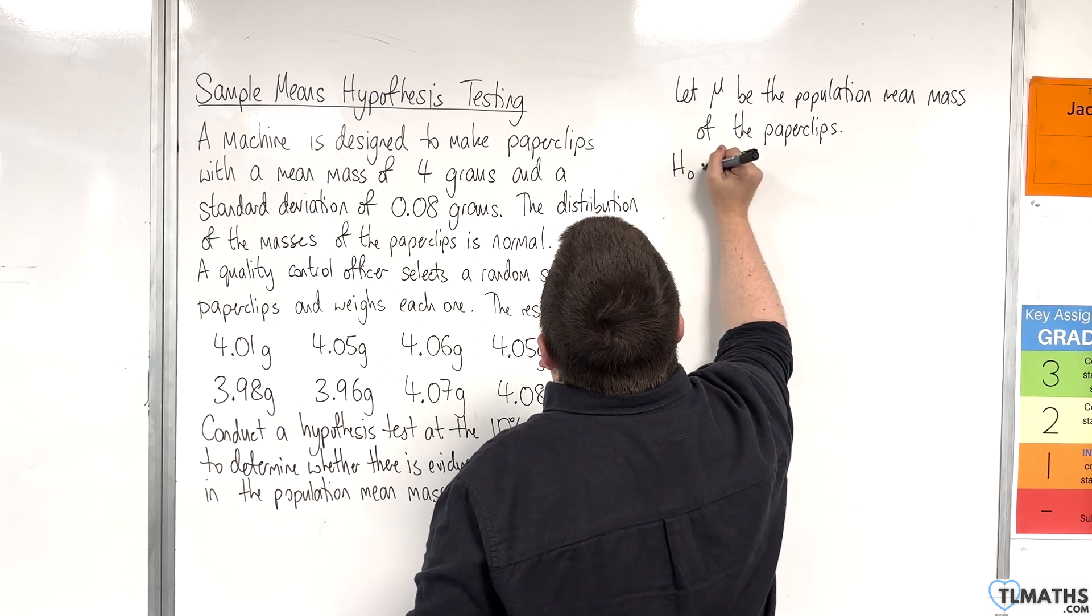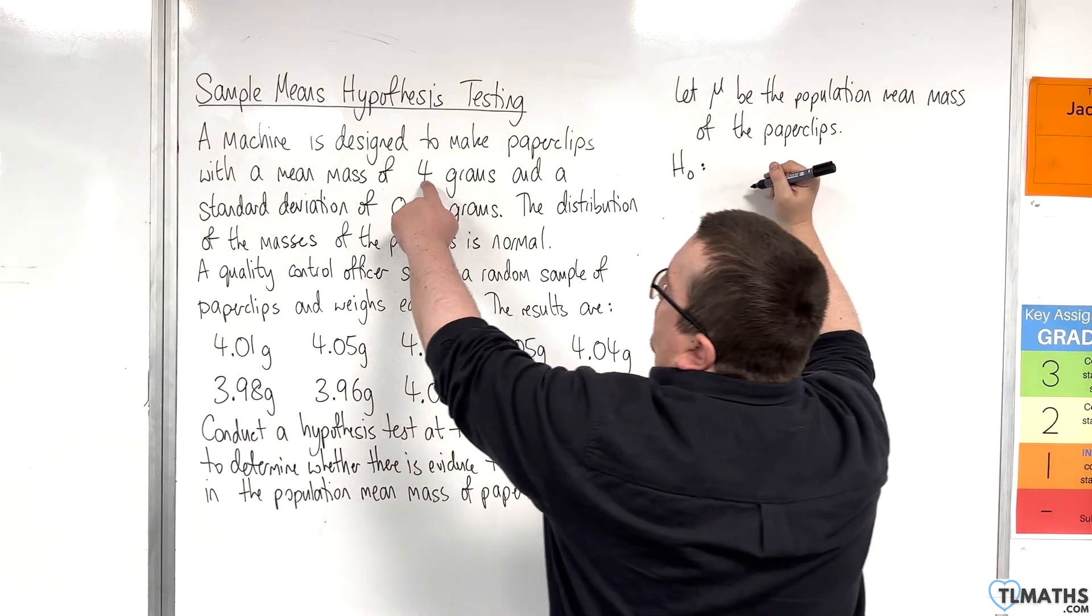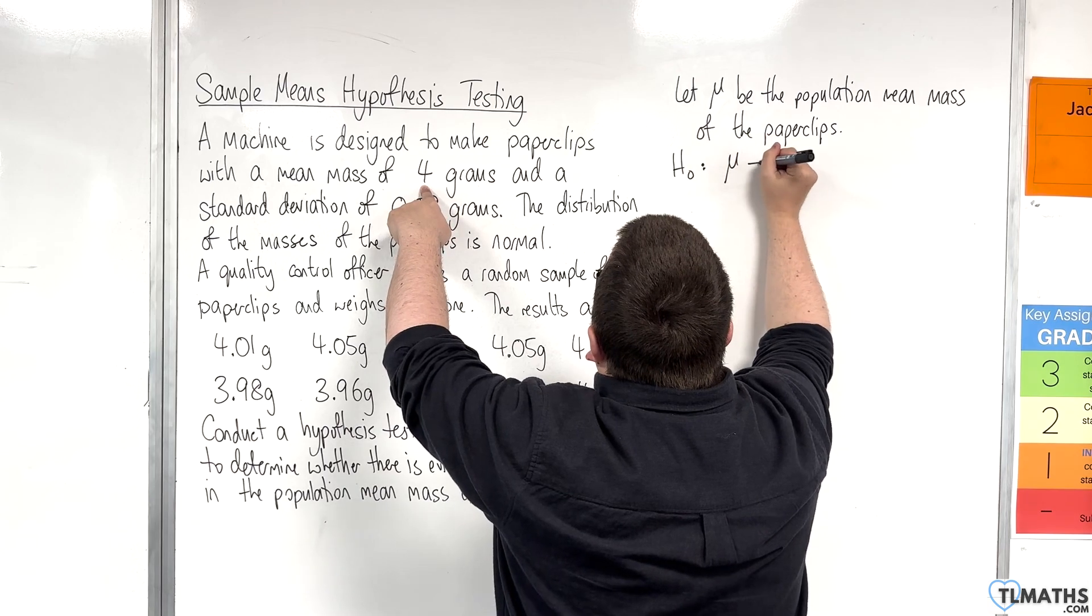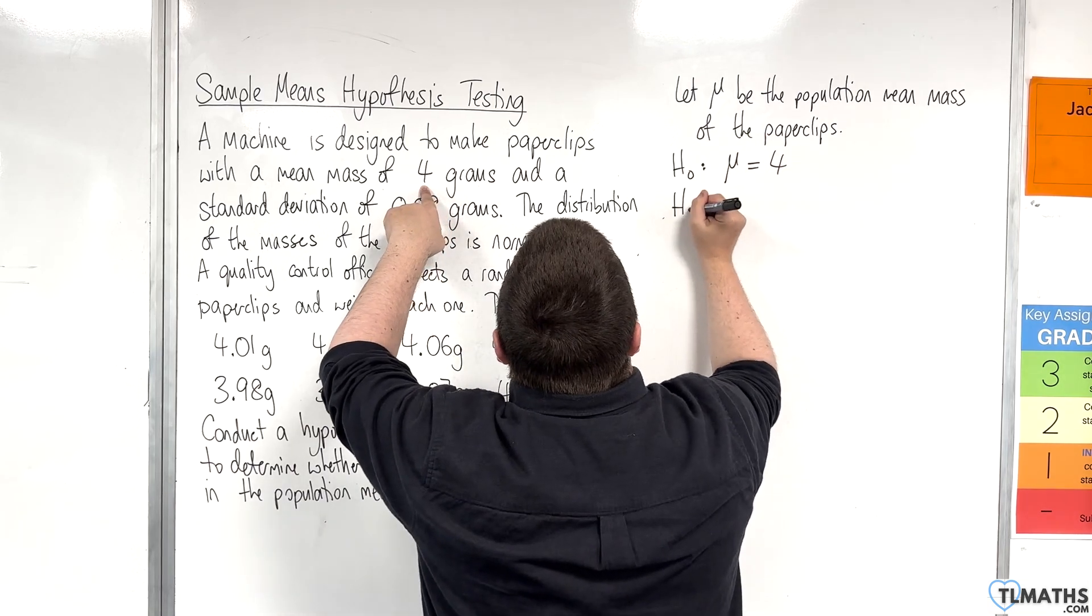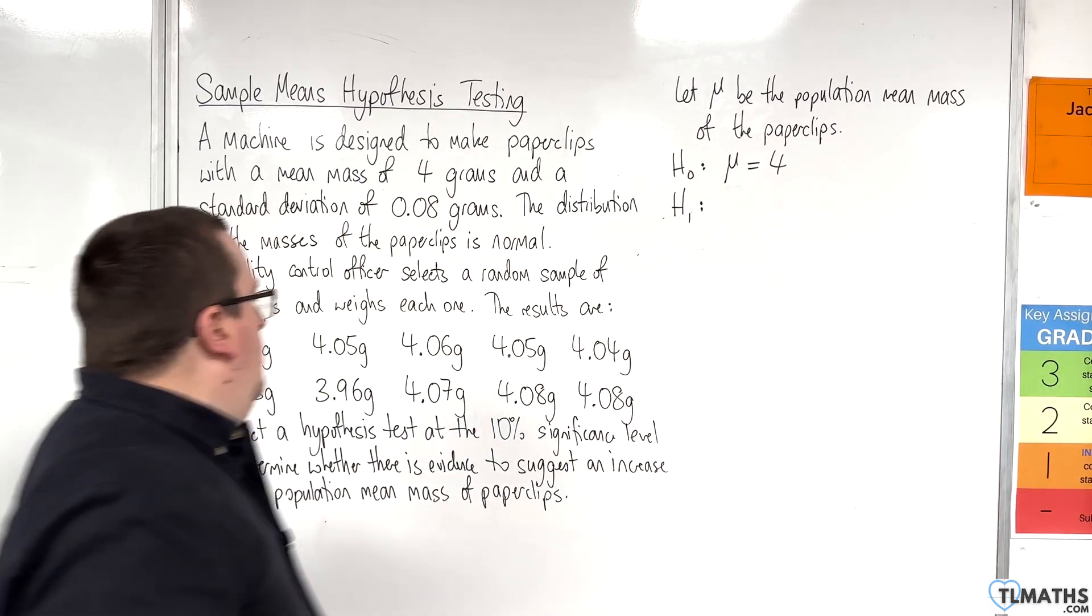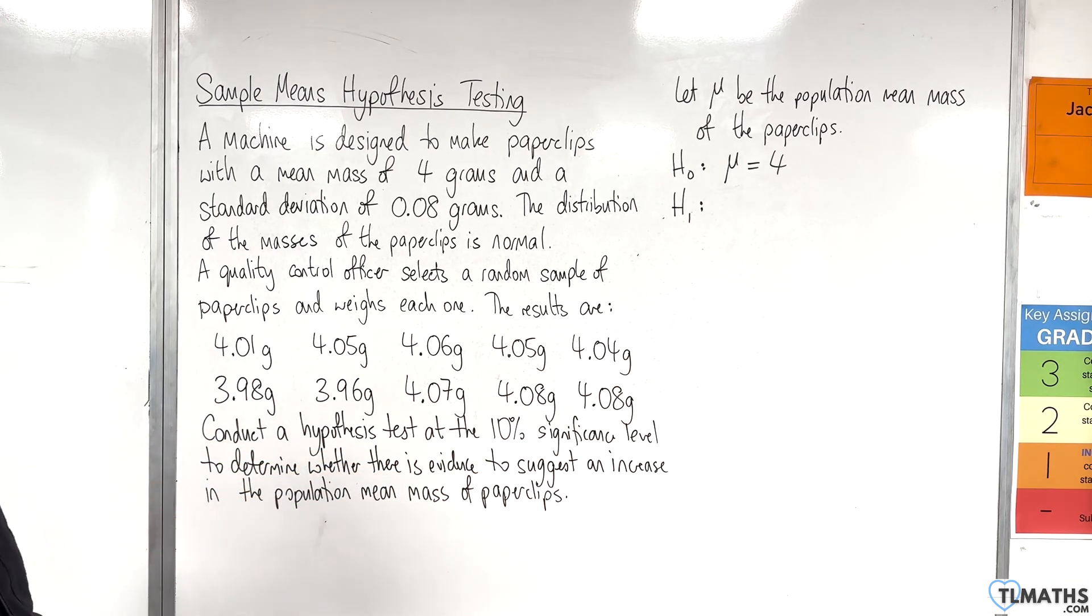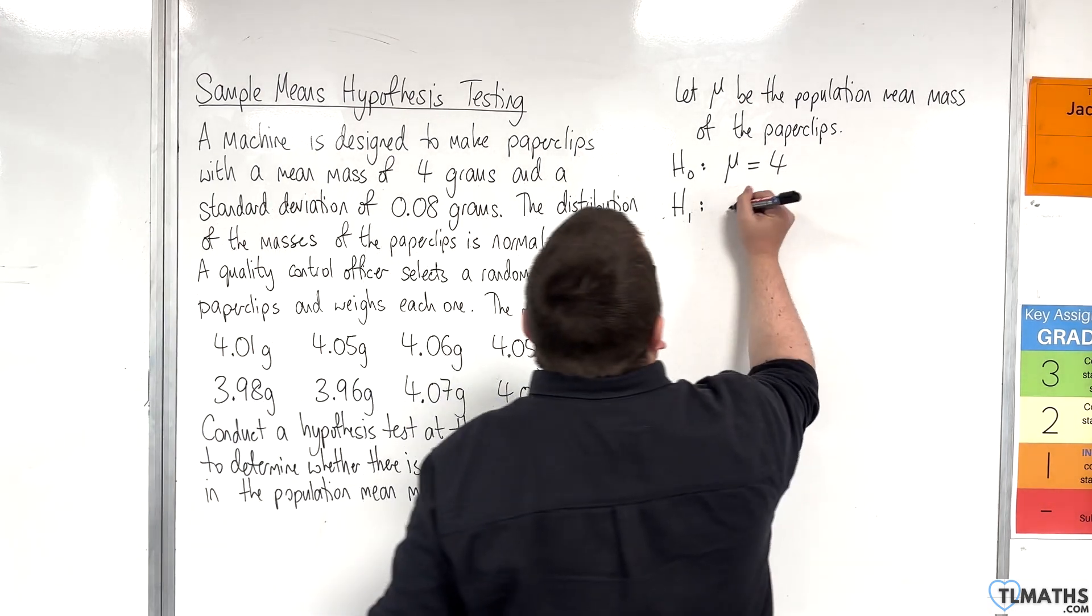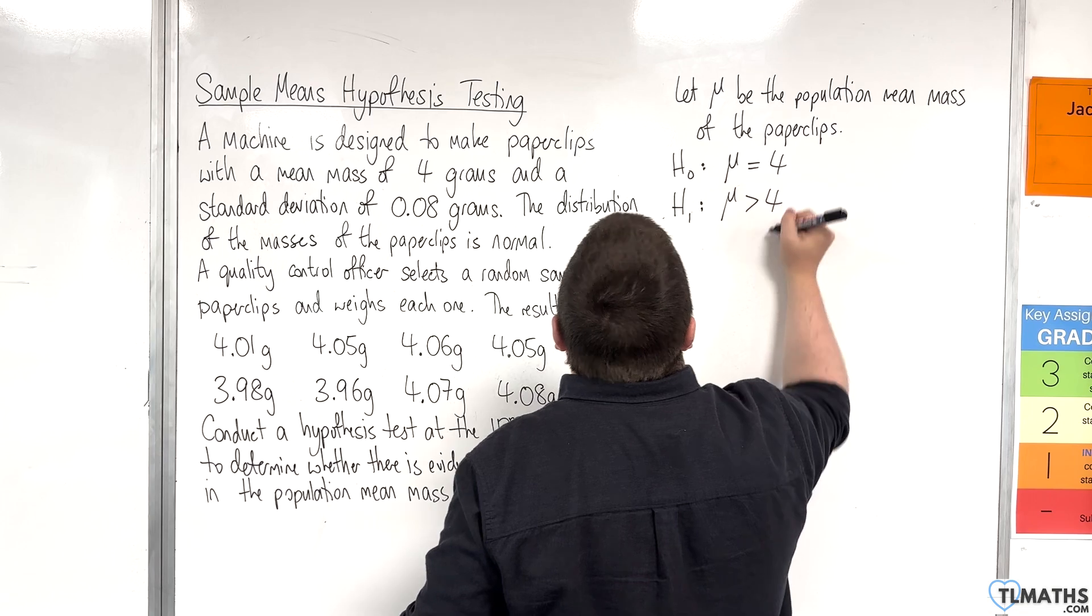Our null hypothesis says that the mean mass is 4 grams, so μ = 4. The alternative - we're looking to see if there's an increase in the population mean, so we're looking to see whether it's greater than 4.